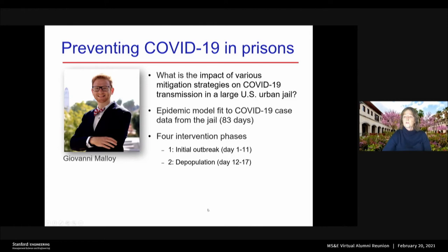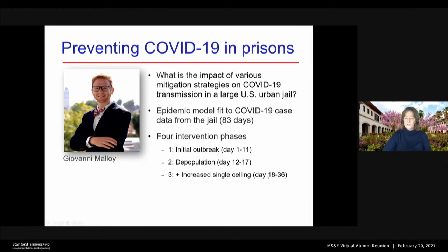The first strategy is depopulation — this is a jail, so the idea was they would release low-risk detainees. In the second phase, which started on day 18, they increased single-celling. The jail takes up eight city blocks and they have some buildings they could repurpose to create single cells for detainees. And finally, on day 37, they started asymptomatic testing of about 50 detainees per day.